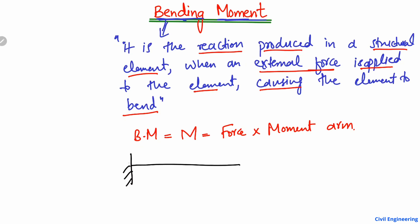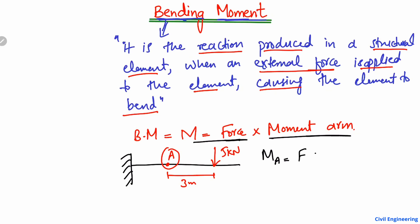Here is a cantilever beam with only a fixed support. For example, I applied a load here — the load applied is 5 kilonewtons. Let's suppose we want to find the moment at point A. The distance from the load to point A is 3 meters. The moment arm is basically the distance from the load to the point of interest.